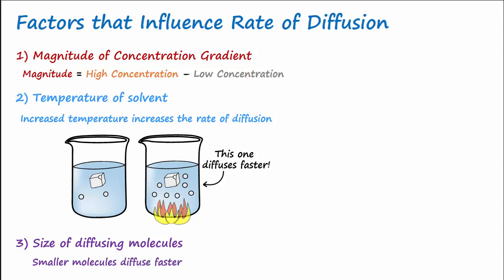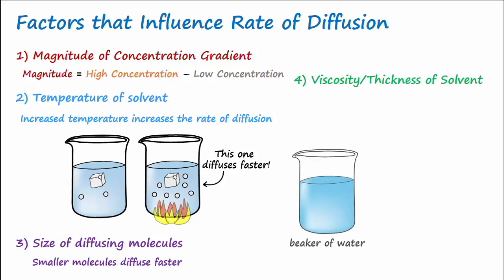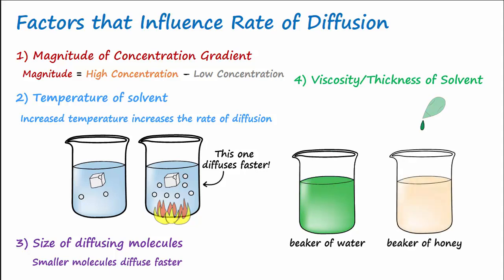The viscosity or thickness of the solvent that the solute is diffusing through also makes a difference. Imagine if we added some liquid dye to a beaker of water. The dye would go from high to low and diffuse throughout the beaker of water. But what if we changed the solvent from water to something really thick like honey? Would the dye be able to diffuse throughout as quickly? No, because increased viscosity of the solvent slows the rate of diffusion.